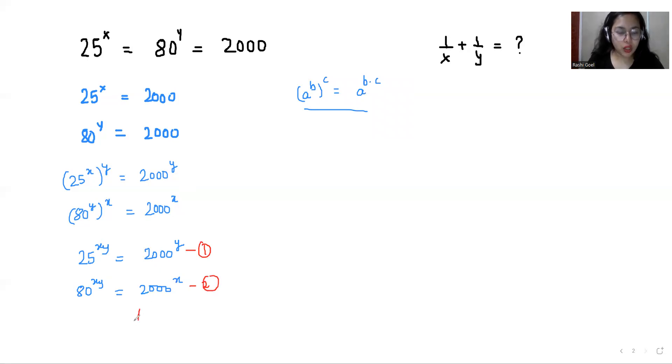So if I multiply both the equations, what I get is 25 times 80, both have same power, so I can write the power once. And here 2000, and if the same number has two powers, suppose a power b times a power c, I can add the power. So here I can add the power as 2000 power x plus y.